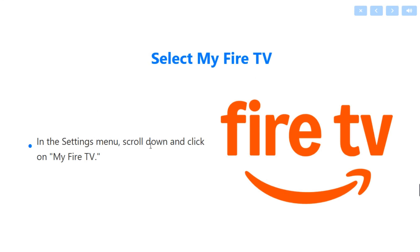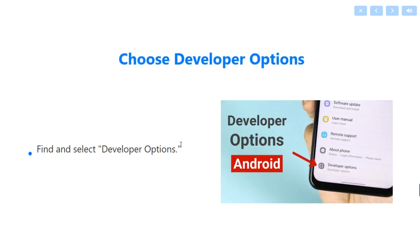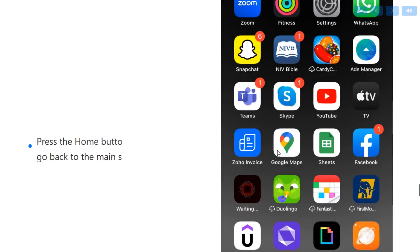Click on My Fire TV, then find and select Developer Options. In Developer Options, make sure Apps from Unknown Sources is turned on. Then press the Home button on your remote to go back to the main screen.